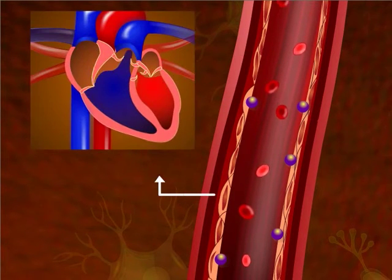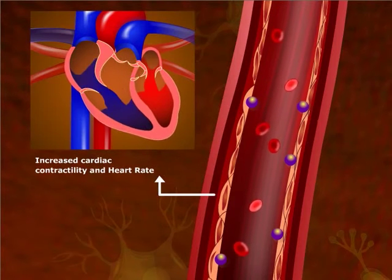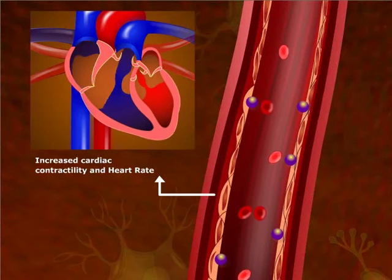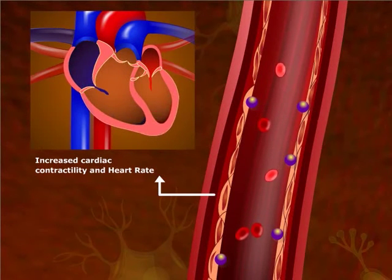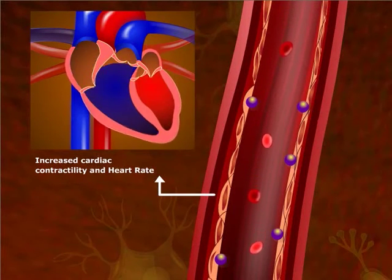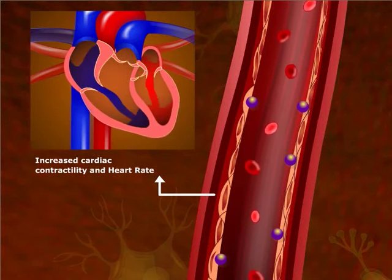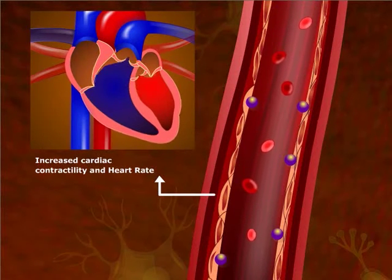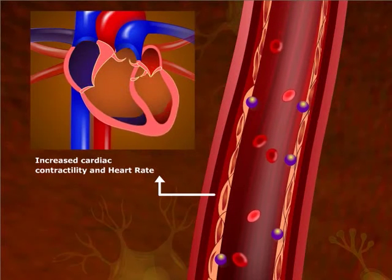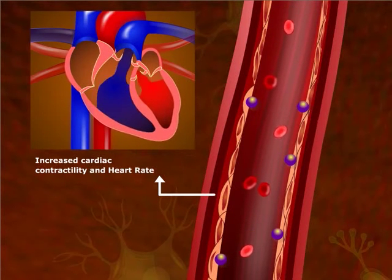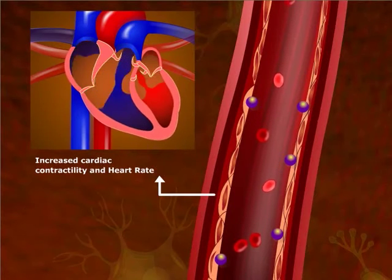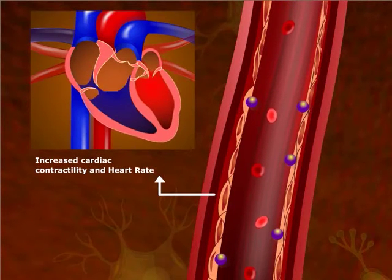Norepinephrine also acts on beta-1 receptors in the heart, increasing both its contractility and rate. Initially, this helps to maintain the cardiac output. However, in the long term, it increases the amount of work the heart has to perform. To counteract these effects of norepinephrine, beta-blockers are used in the treatment of CHF.